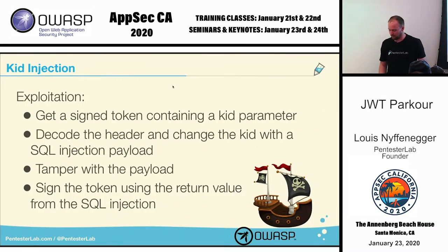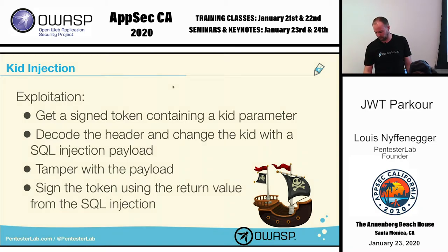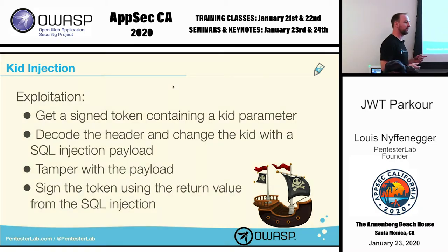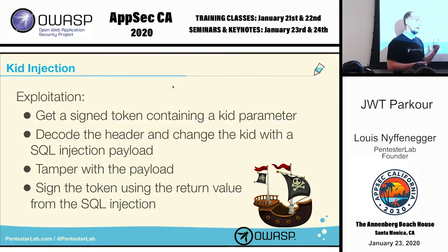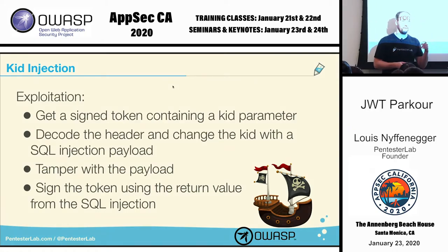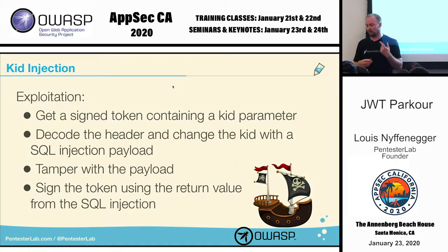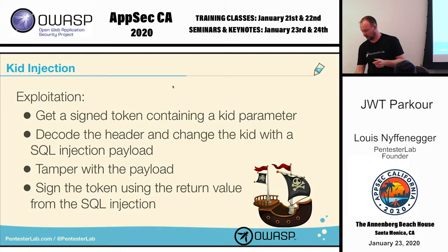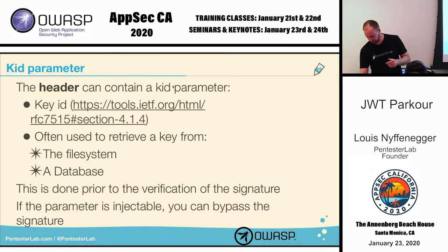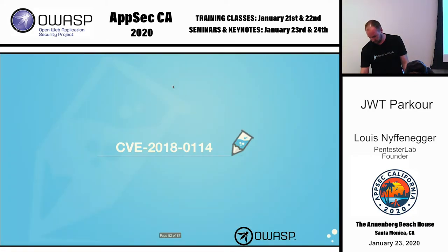You can also have directory traversal with the kid parameter. When you have directory traversal, you can use /dev/null — this returns an empty string, which you use to sign. CVE-2018-0114 was a bug in Cisco's Not-Jose library.